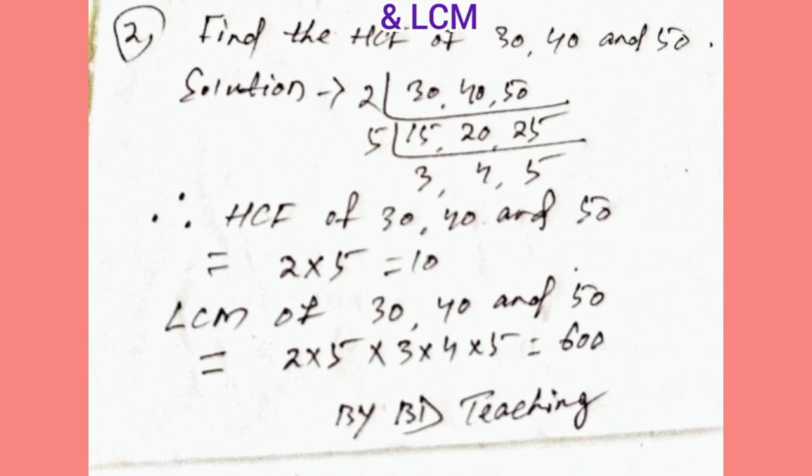In this way we can find the HCF and LCM of 30, 40 and 50 by prime factorization.